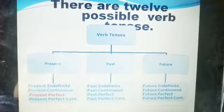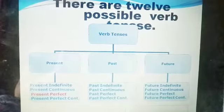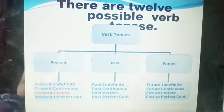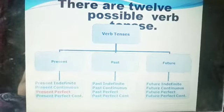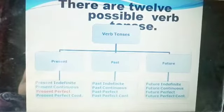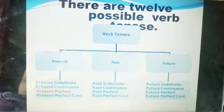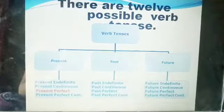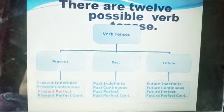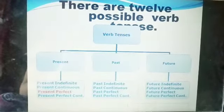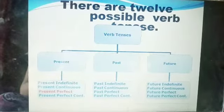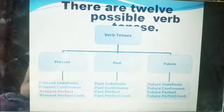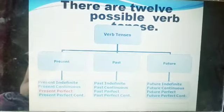I had already told you that Present Tense, Past Tense, and Future Tense all have their 4 aspects: Indefinite, Continuous, Perfect, and Perfect Continuous. In the last 3 lectures, I have already explained Indefinite Tense and Continuous Tense. Now I am going to introduce you to Present Perfect Tense.